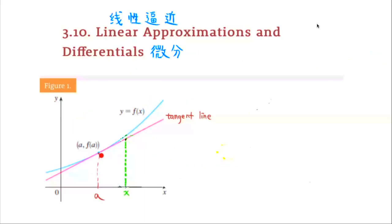Sometimes it might be easy to calculate the function value f(a), but difficult or even impossible to calculate a nearby function value f(x) when x is near a. What we can do is use the corresponding y-value of the point on the tangent line to approximate the actual function value on the curve.